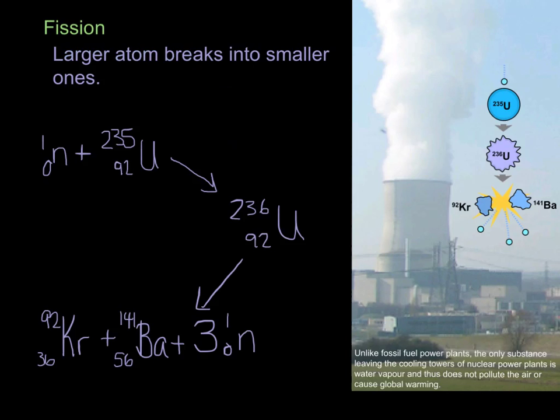Now the next thing we're going to talk about are two types of nuclear reaction, fusion and fission. Fission is when you take a larger atom and it breaks into smaller ones. So in earth science you often hear of the term fissure, which is breaking apart a rock. This is breaking apart a nucleus.